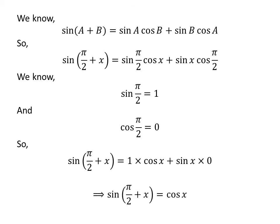As 1 times cosine of x is equal to cosine of x and sine of x times 0 is equal to 0, sine of half of pi plus x is equal to cosine of x plus 0, which is equal to cosine of x.